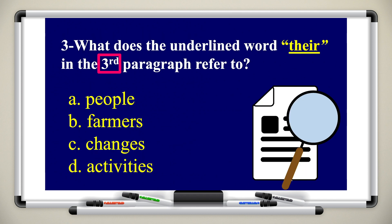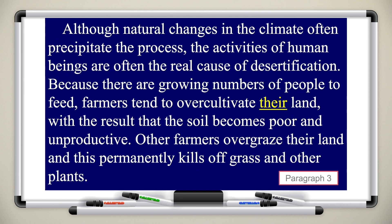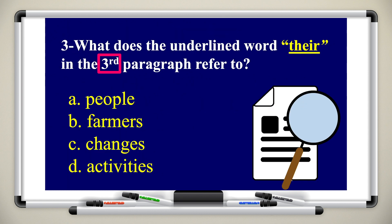What does the underlined word 'there' in the third paragraph refer to? When we have word reference, we go back to the paragraph and read the whole sentence, or maybe the sentence before. Here 'there' is underlined and highlighted. The sentence reads: 'Because there are growing numbers of people to feed, farmers tend to over-cultivate their land.' Is it people, farmers, changes, or the activities? 'There' refers to the farmers.